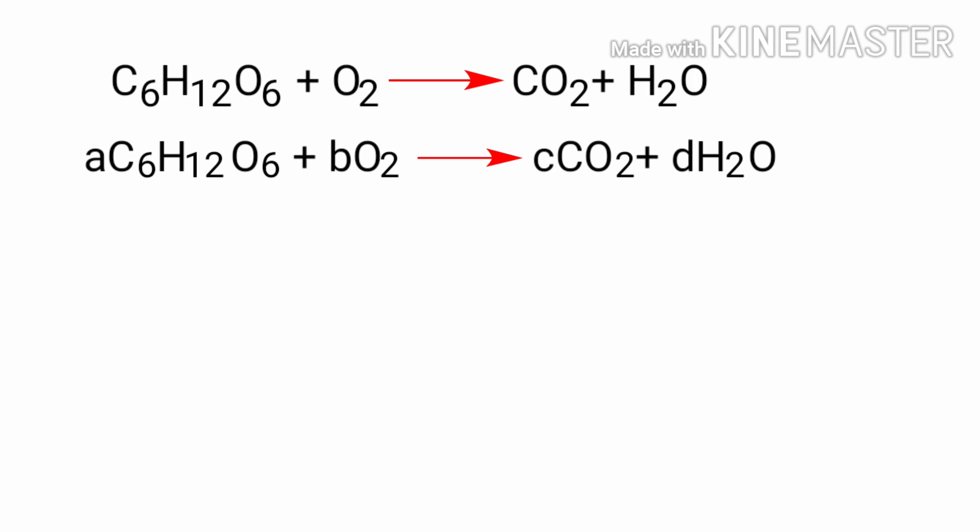Next, applying the conservation of mass — the total number of atoms of each element must be the same on both sides. We write algebraic rules for each element.